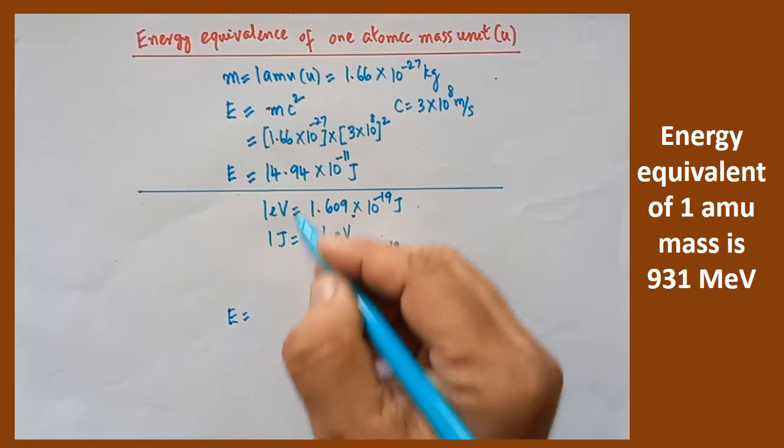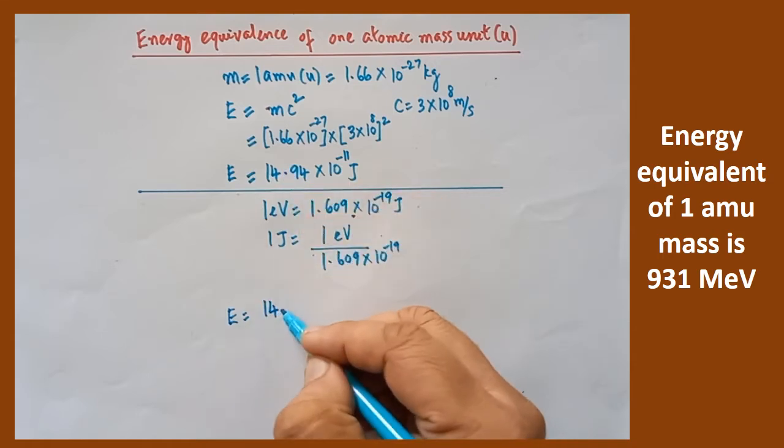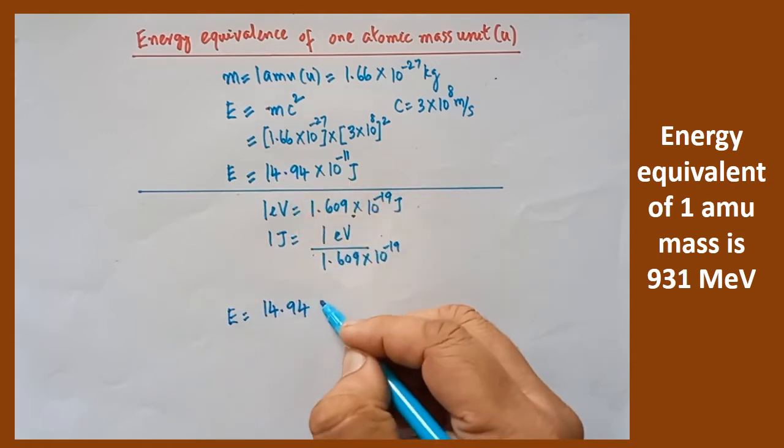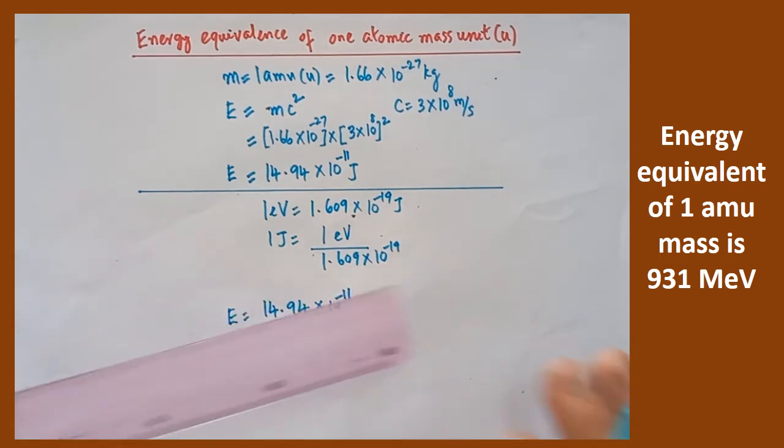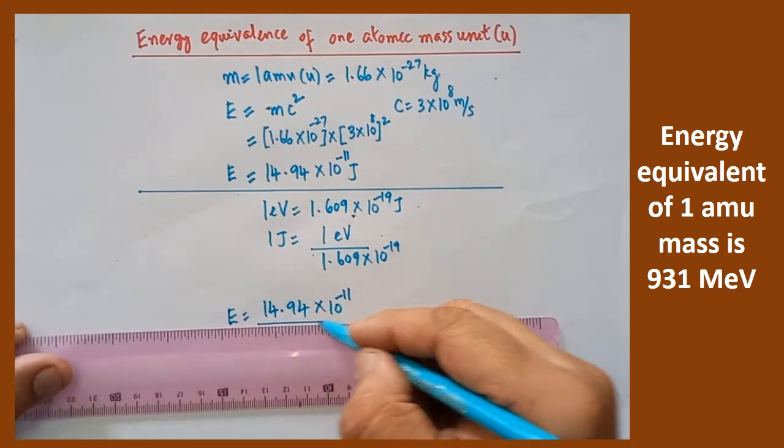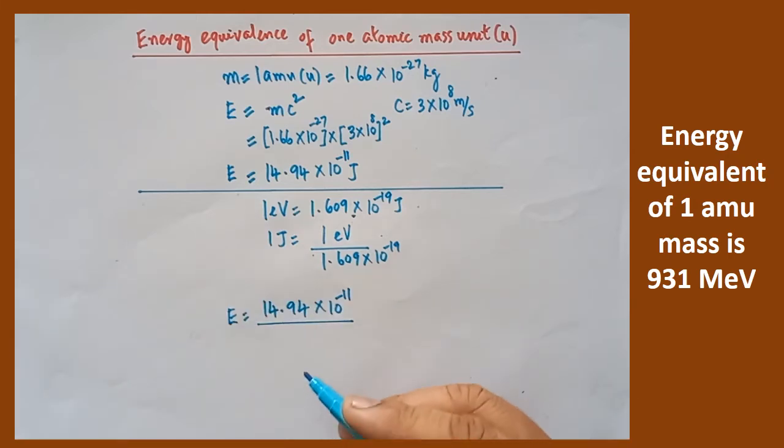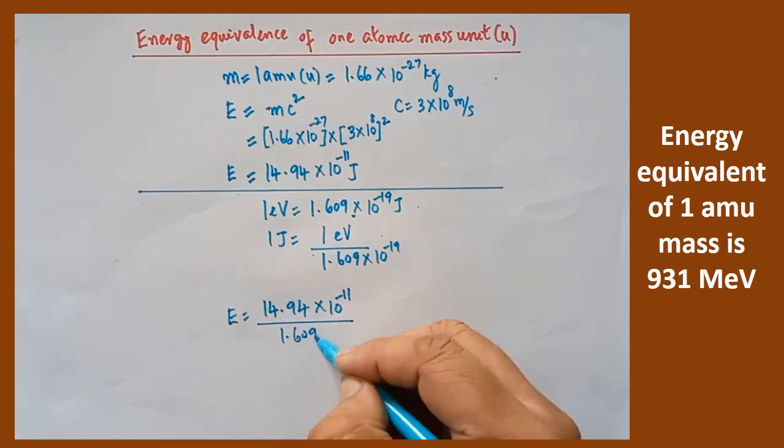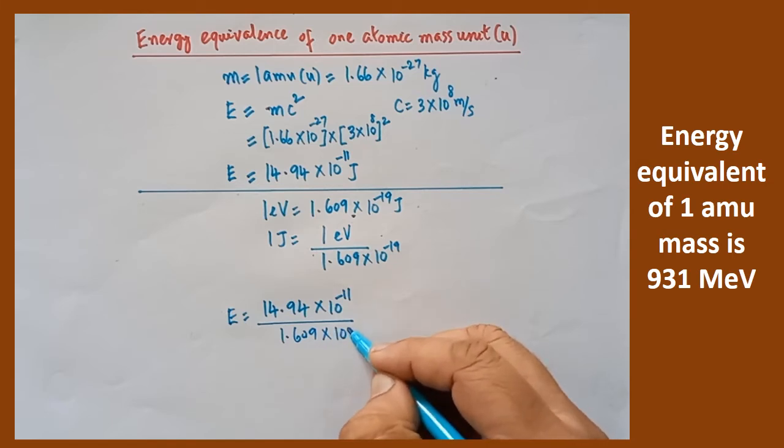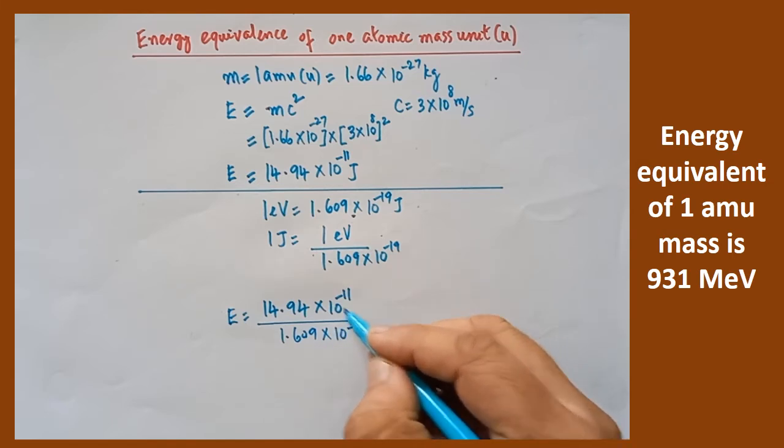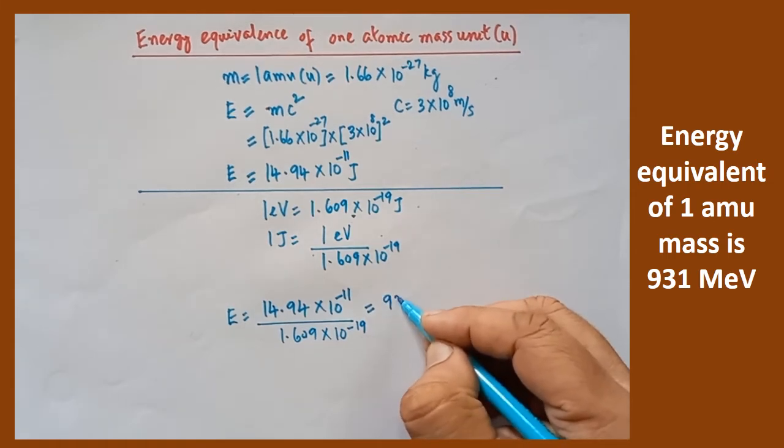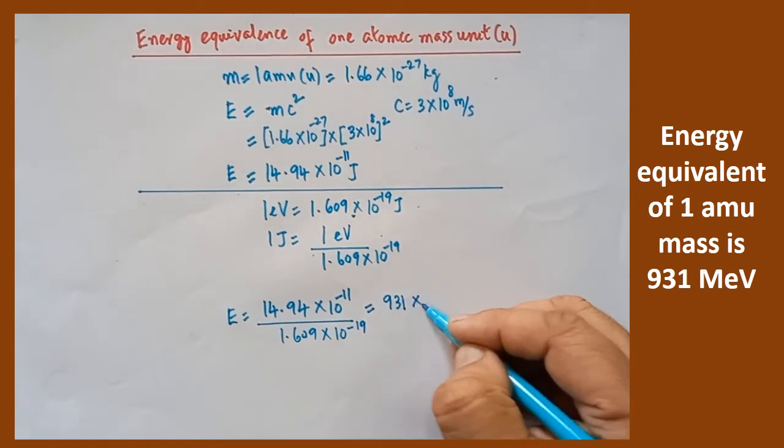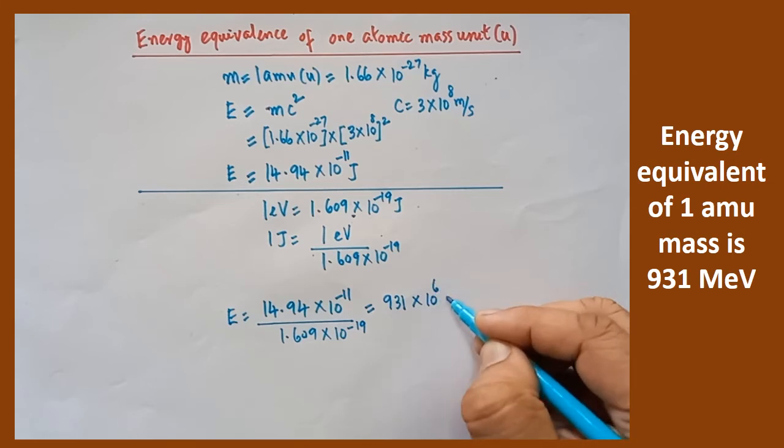E is equal to, write this value, 14.94 into 10 to the power of minus 11 divided by which value? 1.609 into 10 to the power of minus 19. After calculation, you will get the answer as 931 into 10 to the power of 6 electron volt. That is the answer you will obtain.